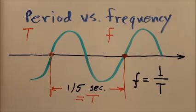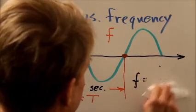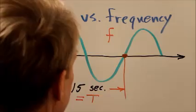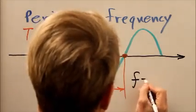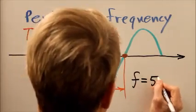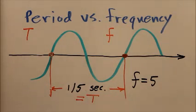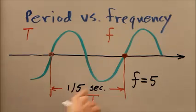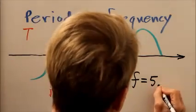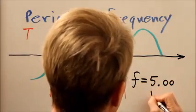Well, the period is 1/5th of a second. 1 over 1/5th is 5. So our frequency is 5 hertz. Well, actually, we're given this to three significant figures, so we can call it 5.00 hertz.